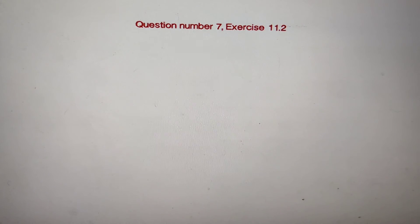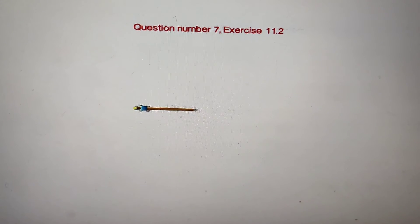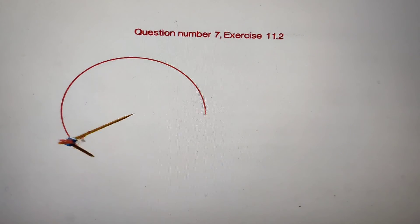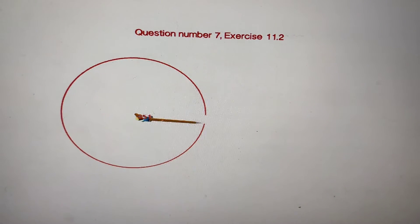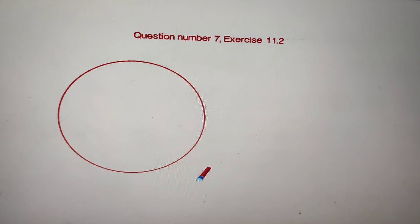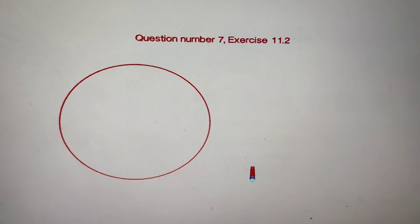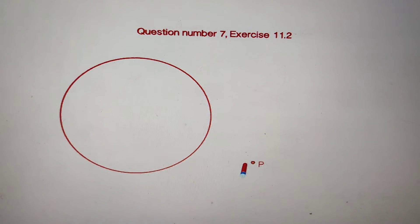First, we make a circle with the help of a bangle without knowing the center. I just draw a circle; I will not use the center of this circle. Take a point P outside the circle, anywhere you can take.